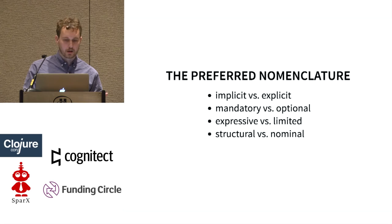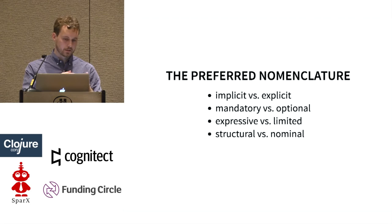Everything has a type system — it's just whether you wrote it down. Imagine you're interpreting a Clojure program in your head: there are types there. This function sometimes takes an int and sometimes takes a string. It's just that now we can express it with spec.